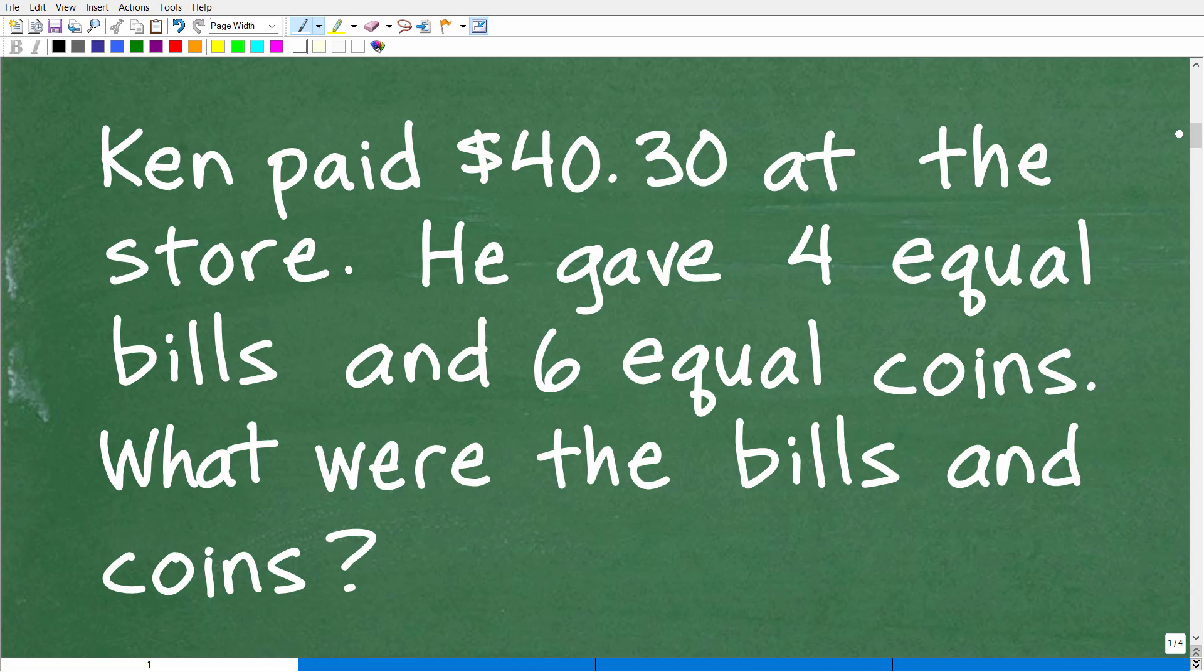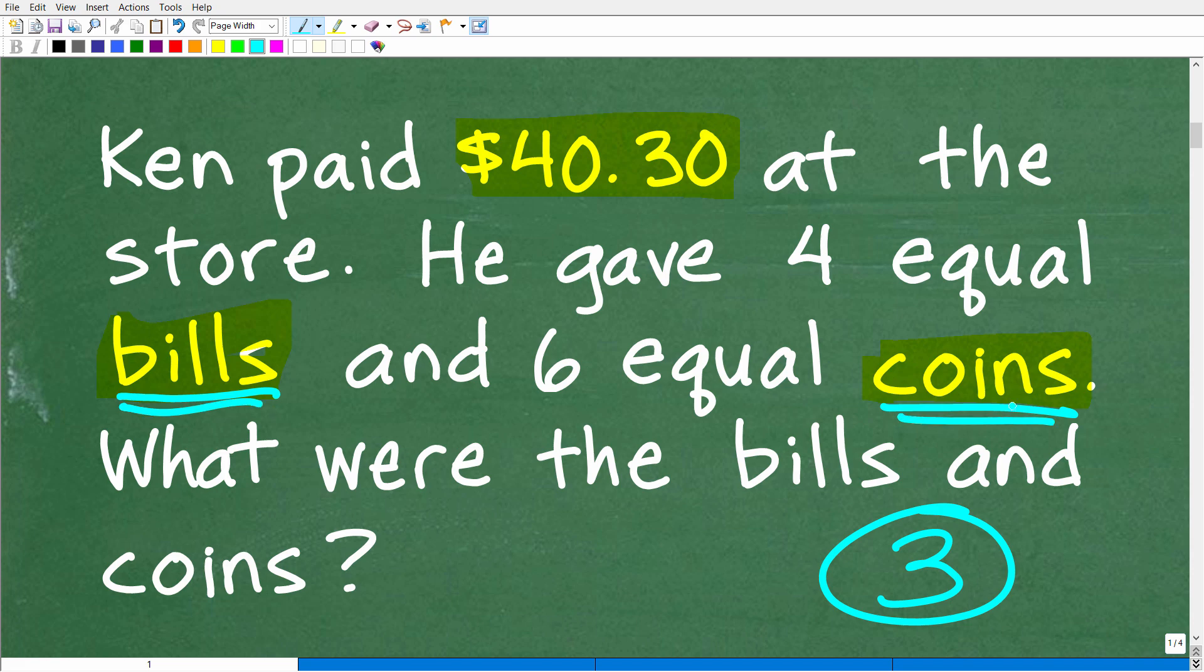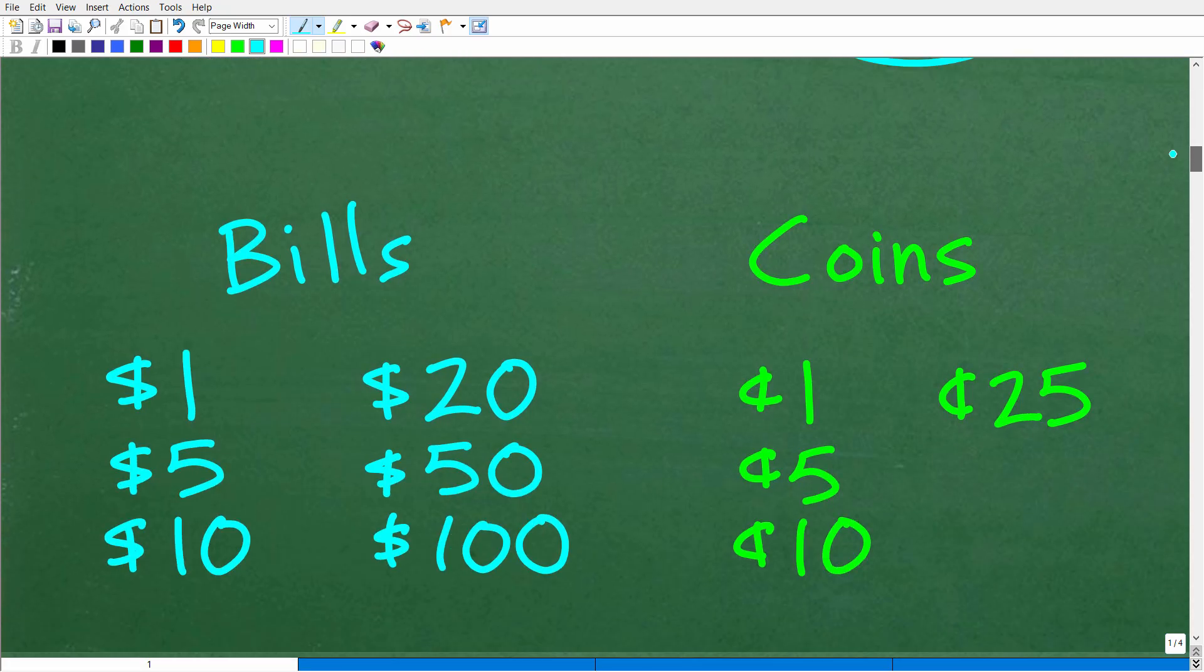Anytime we're dealing with a money problem, we need to understand the different terminology that goes along with it. So Ken paid this amount of money and the question is asking about bills and coins. You always want to use the rule of three, which is to read the problem at least three times so you can fully understand what's going on. We are talking about currency in the United States dollar bills. Let's just quickly review our options here that Ken could have paid with. Let me show you some of the options that Ken could have paid with.